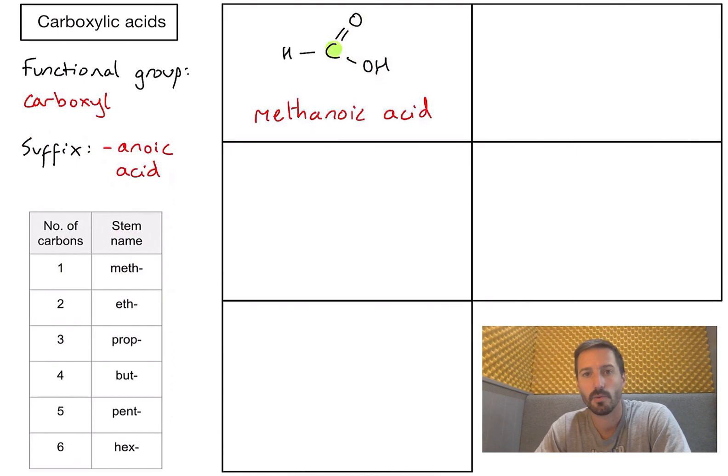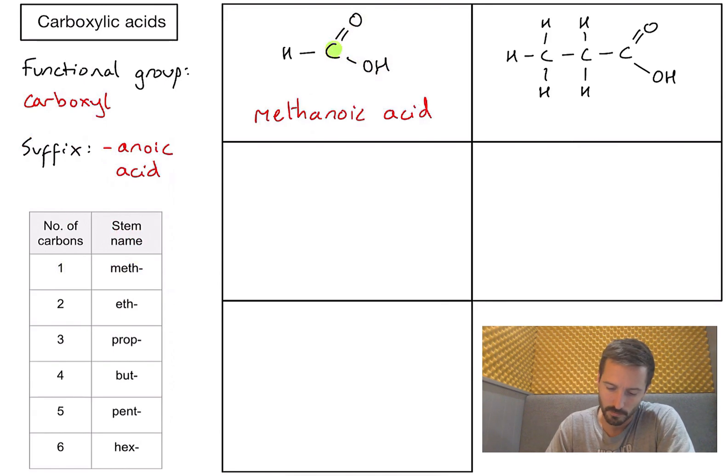Example number two. Same thing, I can see my carboxyl functional group down on the right hand side there. How many carbons are in that molecule? I've got one, two, three. That relates to the stem name of prop. So if I write down that stem part of the name and add my suffix on, I've got propanoic acid in that example.